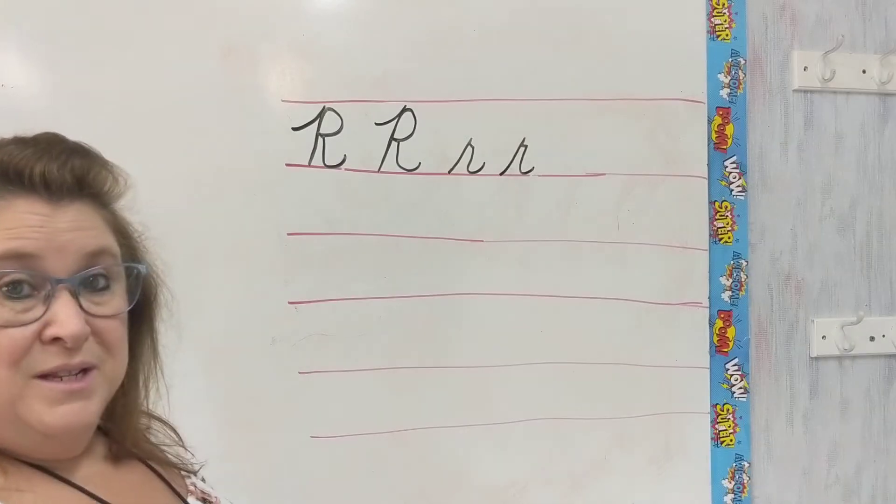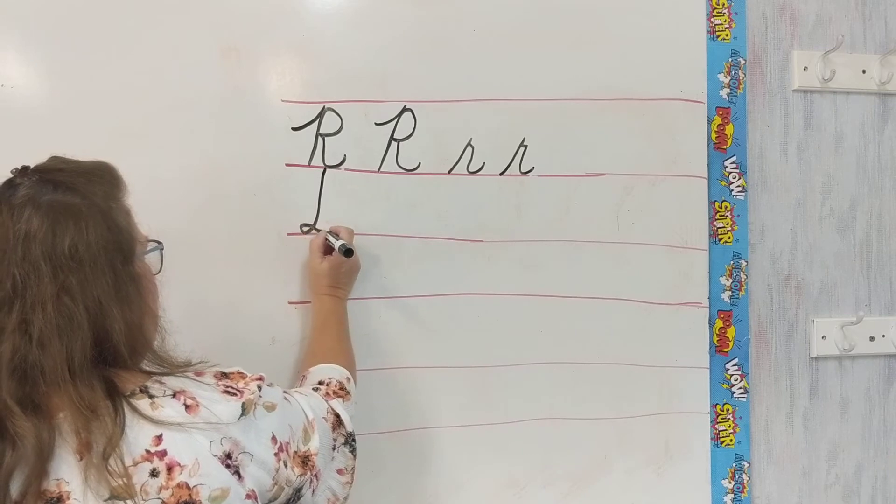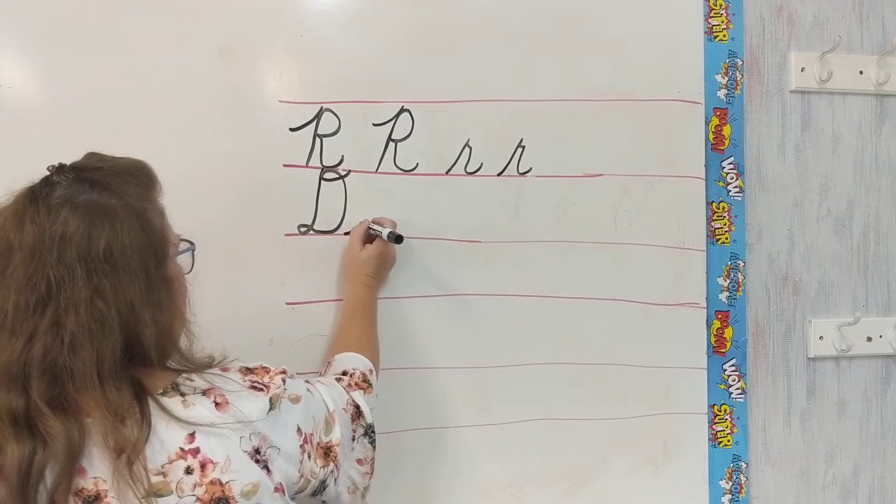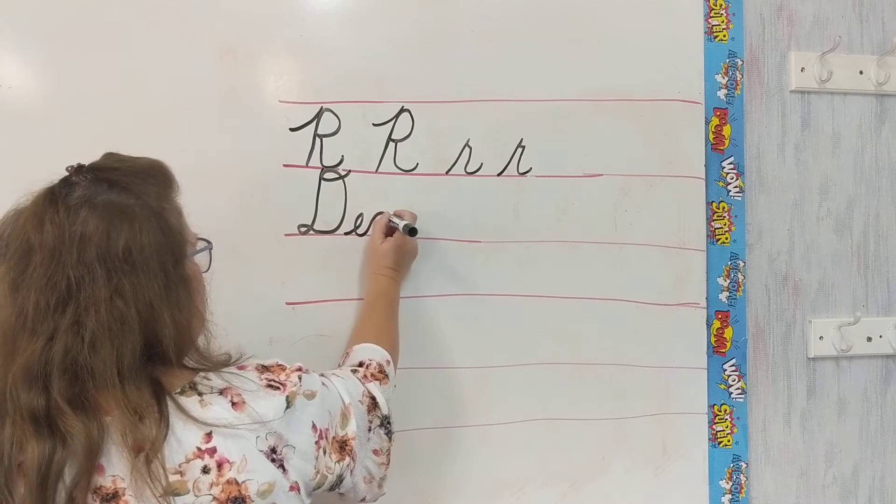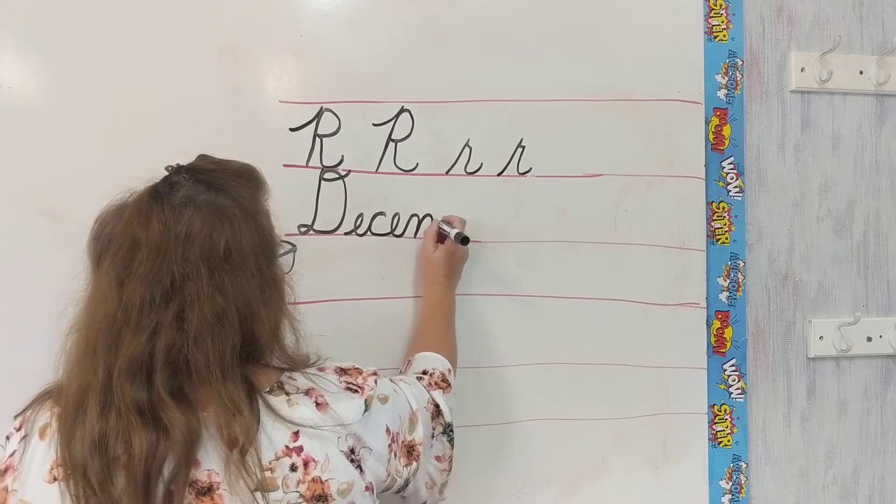We're going to be writing the word December today, so watch with me while I write December. Curve around and down, swing up, put a loop-de-loop in the top of our D. We're going to make our E. Come up for our C. I'm swinging out for my letters. You see that? Swinging out for my three humps on my M.